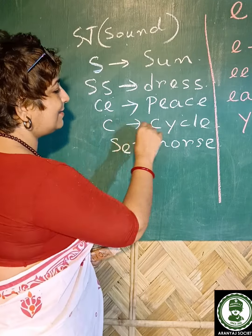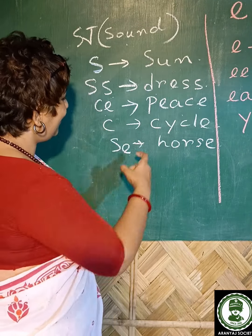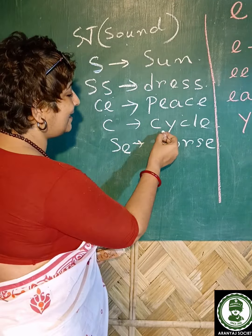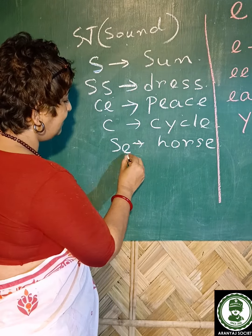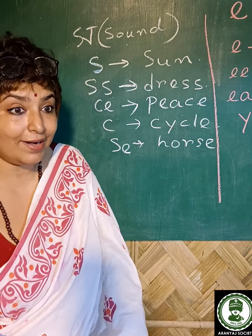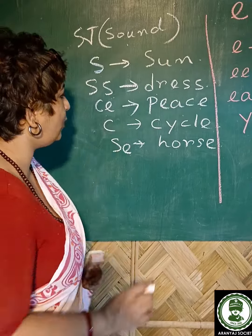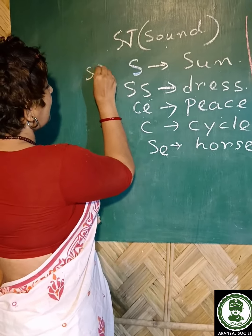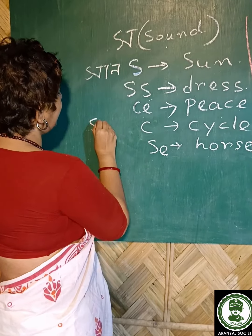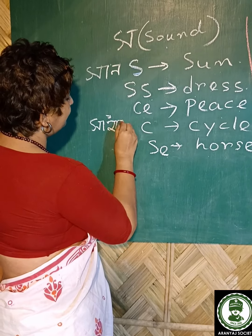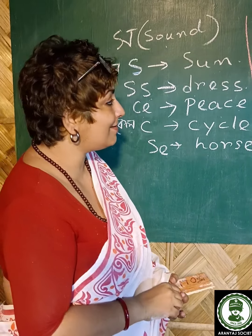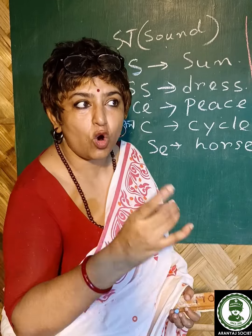CE is 20. So this is 100. We have to write 100. Horse from AC. We can write 100. Sun. Cycle. In English, we have to write 100.